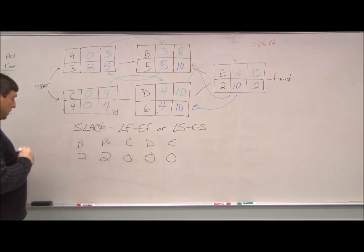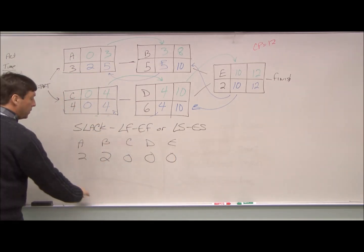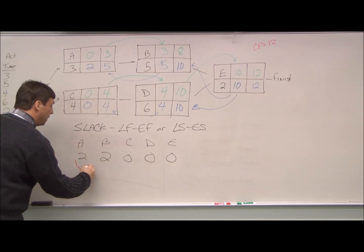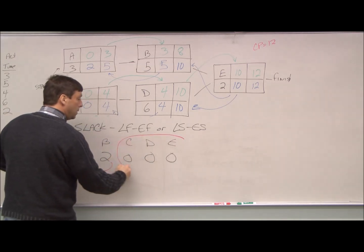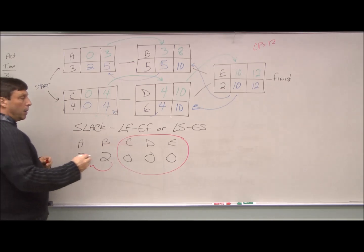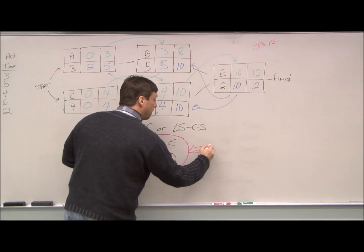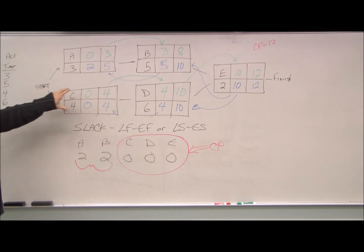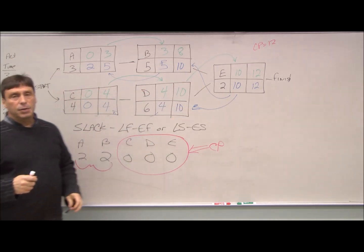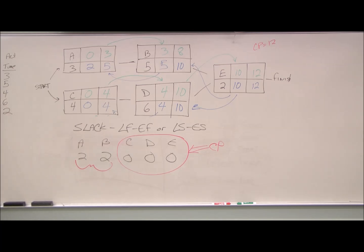So what this is telling us, first of all, is we have two weeks of slack in these two operations. Second thing it's doing is showing us our critical path. Because we have zero slack, and by definition, that has to be our critical path.